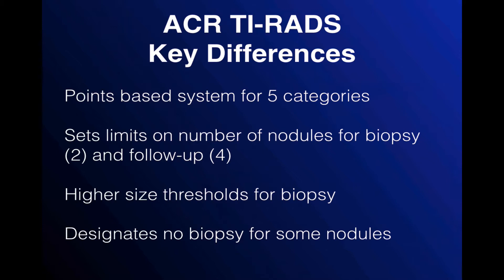First of all, it's a point-based system and points are allocated for five different categories of findings. These are added up to give you the ACR TIRADS level, and then management for biopsy, follow-up, or nothing depends on the size. It also states that no more than two nodules should be biopsied and no more than four nodules should receive follow-up — meaning you don't need to report more than four nodules in the radiology report. It has higher size thresholds for biopsy of low suspicion lesions and designates no biopsy for some nodules that look benign.